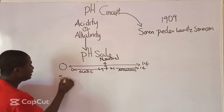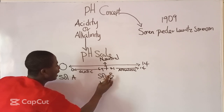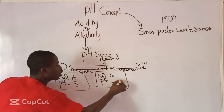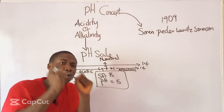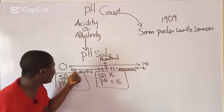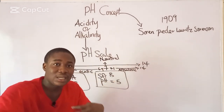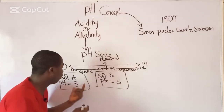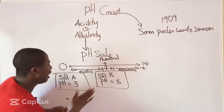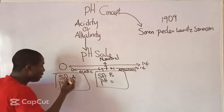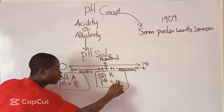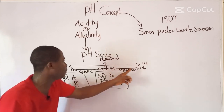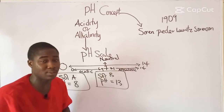Let us assume two solutions: solution A with pH 3 and solution B with pH 5. The arrow goes towards 0 as acidity increases, so pH 3 is more acidic than pH 5 — solution A is more acidic. Similarly, if solution A has pH 8 and solution B has pH 13, solution B is more alkaline because the arrow goes towards 14.